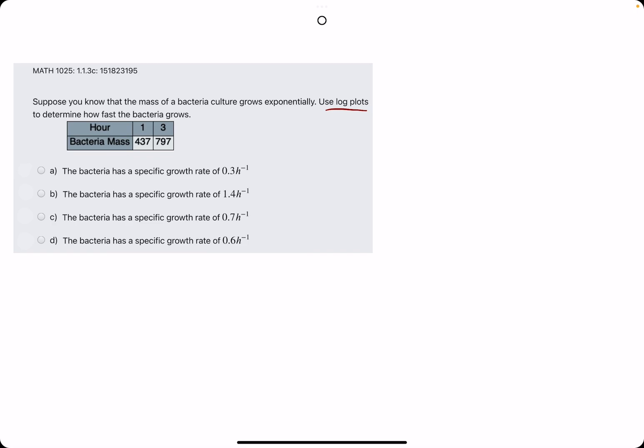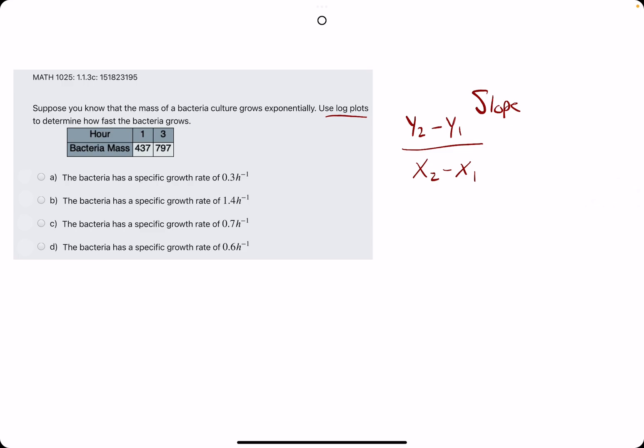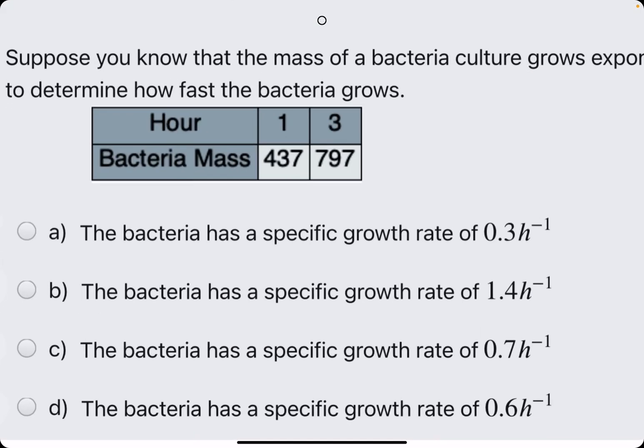Let's talk through just the basic procedure on how to do it first. We will be using slope formula, which is y2 minus y1 over x2 minus x1. However, before we just jump right into this, we want to take the natural log of the bacteria mass values first.